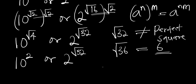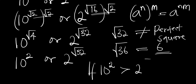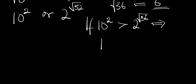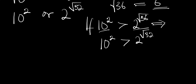The key reasoning is: if 10^2 is greater than 2^(√36), it simply means that 10^2 is also greater than 2^(√32), since √36 > √32 making 2^(√36) > 2^(√32). So we now compare 10^2 versus 2^(√36).